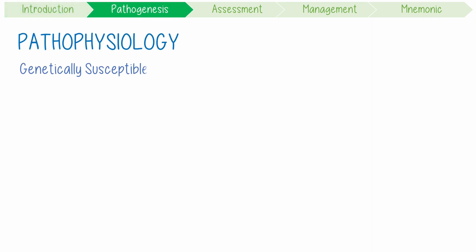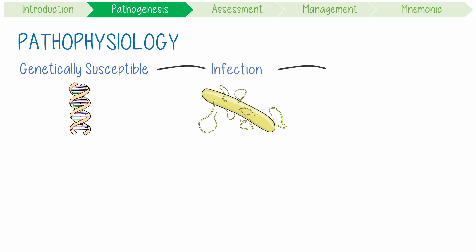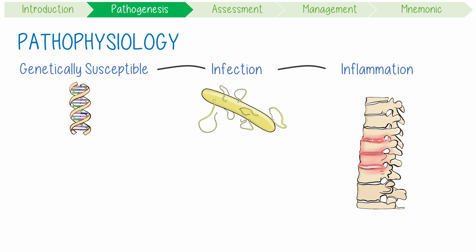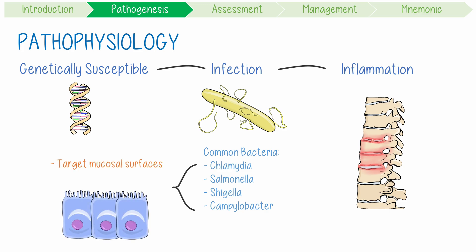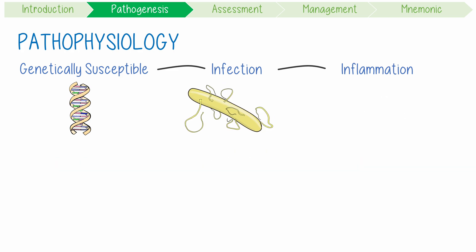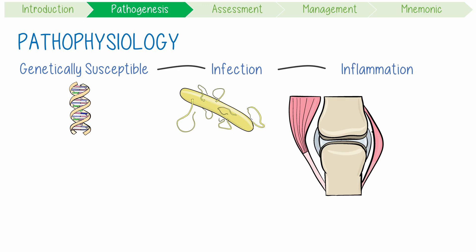Its pathogenesis involves a genetically susceptible patient acquiring an infection and subsequently inducing an inflammatory syndrome. This infection is usually from a commonly associated bacteria like chlamydia, salmonella, shigella, or campylobacter. These all share some characteristics like the capacity to target mucosal surfaces and survive intracellularly. The pathogenic mechanisms for the resulting arthralgia are unclear.